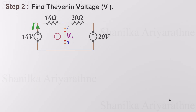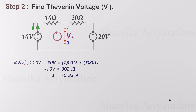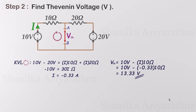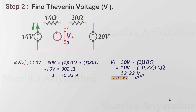This circuit contains only one loop, so you could use Ohm's law directly to find the current. However, for demonstration purposes, I'll use Kirchhoff's voltage law. Start by summing the voltages of the sources and the drops across the resistors. The current flowing through the loop is calculated as 0.33 amps. Then the voltage across points A and B equals the voltage of the power source minus the voltage across the resistor. Calculating from the 10 volt source side, we get the voltage as 13.33 volts. This is the Thevenin voltage.